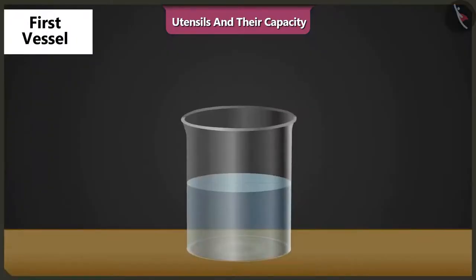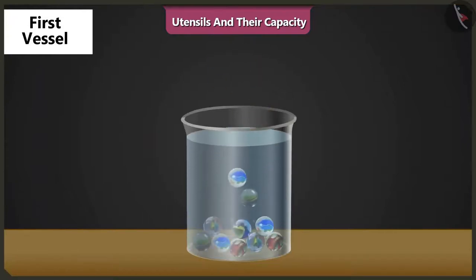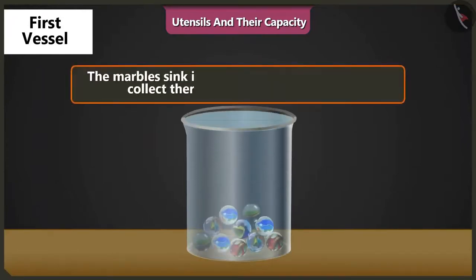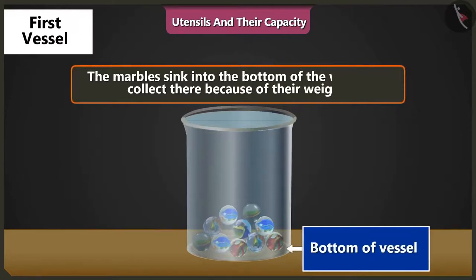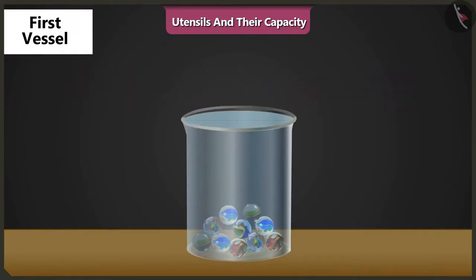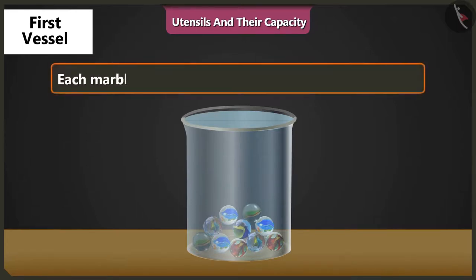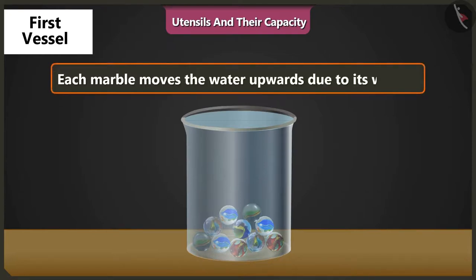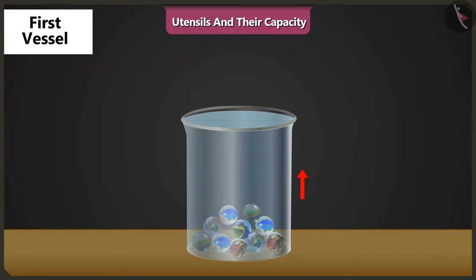Mishtu, when we drop the marbles in a vessel half filled with water, the marbles sink to the bottom of the vessel and get collected there due to their weight, and as a result, the water comes up. Yes, I understood. When marbles are dropped in the water, each marble moves the water upwards due to its weight, and the water level rises.